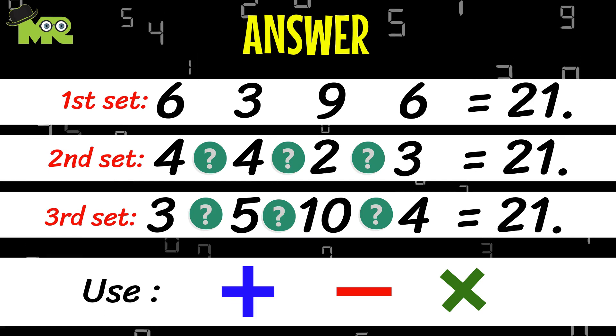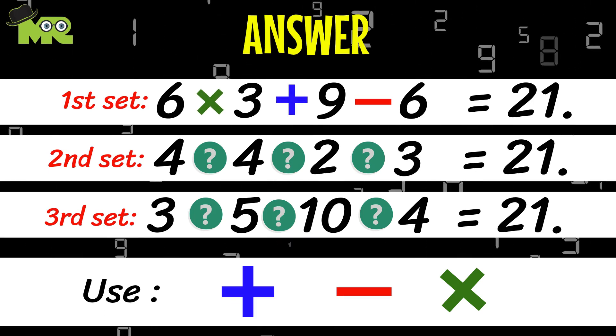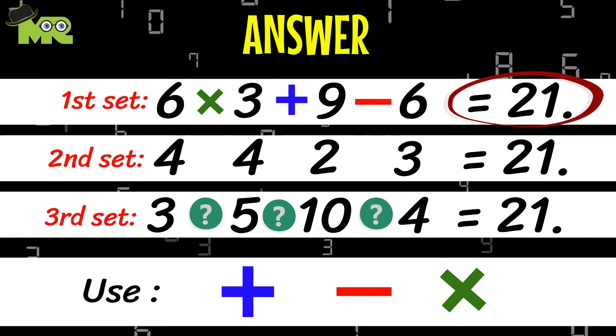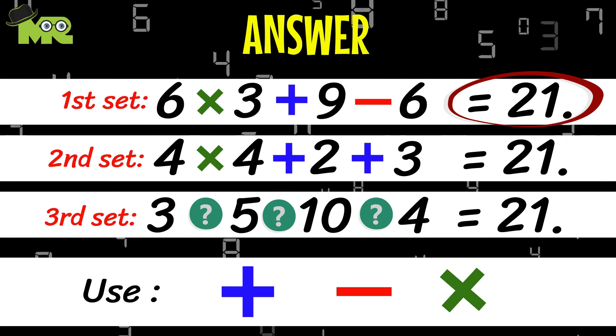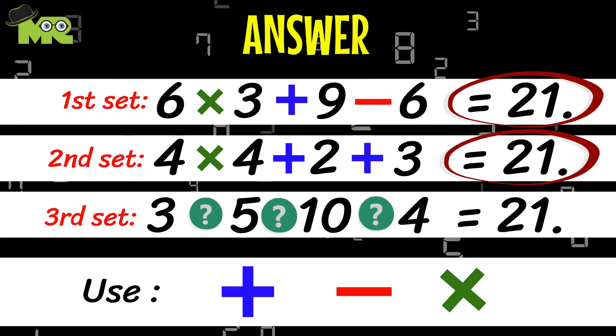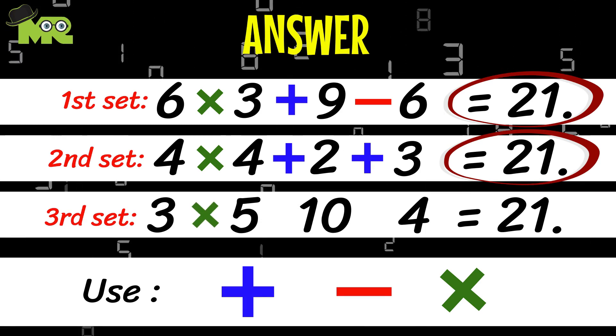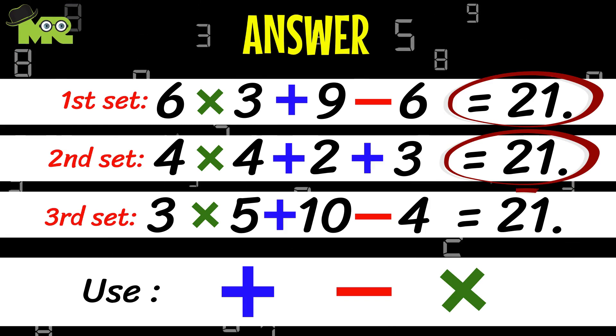The first set answer is 6 multiplied by 3 plus 9 minus 6 equals 21. The second set of answers is 4 multiplied by 4 plus 2 plus 3 equals 21. The third set of answers is 3 multiplied by 5 plus 10 minus 4 equals 21.